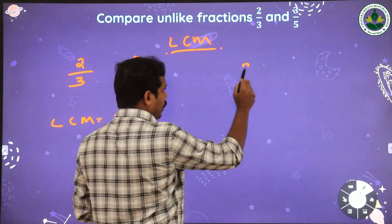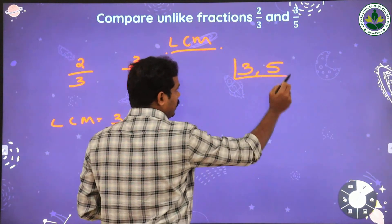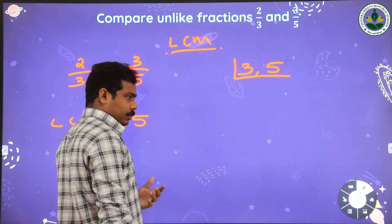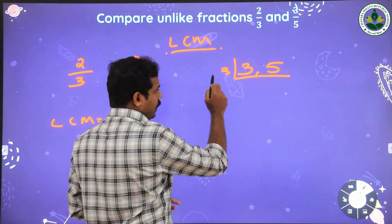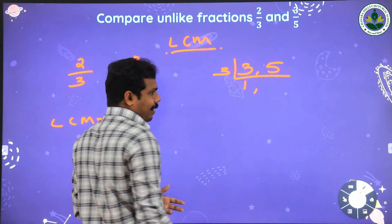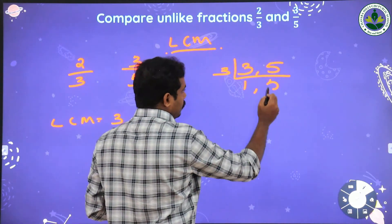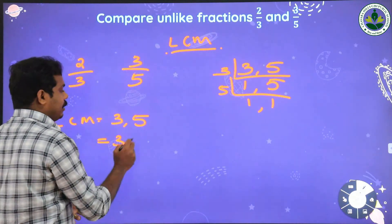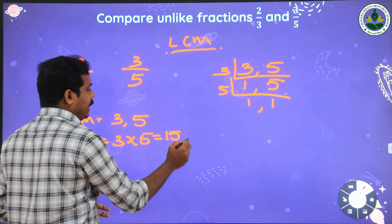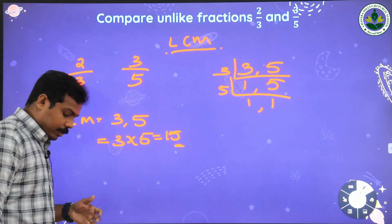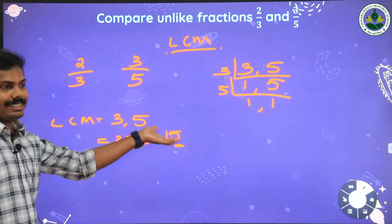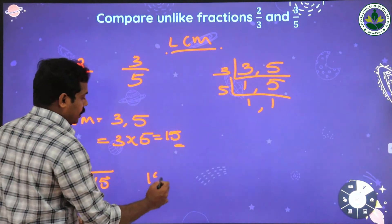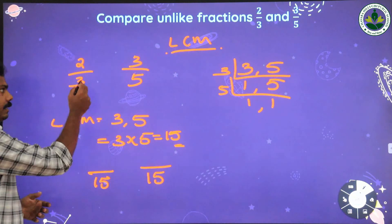To find the LCM, I write the numbers together and divide with possible prime numbers. We can't divide by 2, so we move to the next prime number, 3. Three ones are three; we can't divide 5, so we write it down, then divide by 5 — giving 1 and 1. The LCM is the product of the prime numbers: 3 into 5 equals 15. So 15 is our new common denominator.